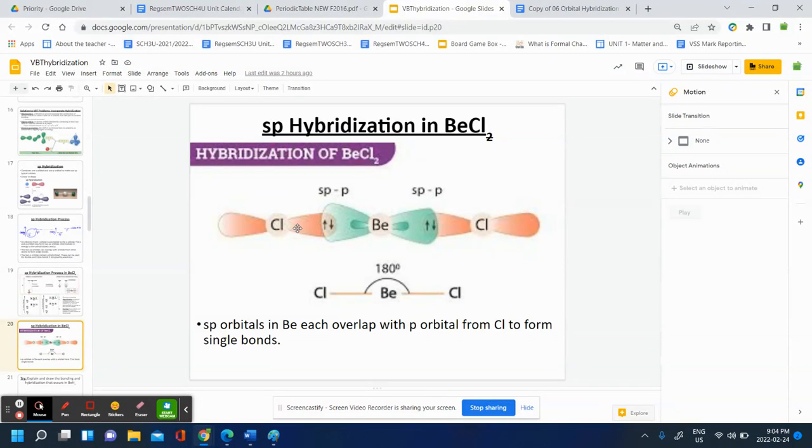You should be able to illustrate that with an orbital representation drawing with the overlap of the SP hybridization with the orbitals of CL and CL here, and understand how this translates to a linear shape.